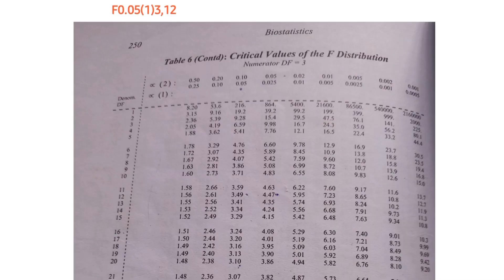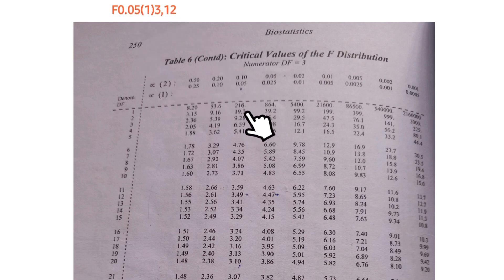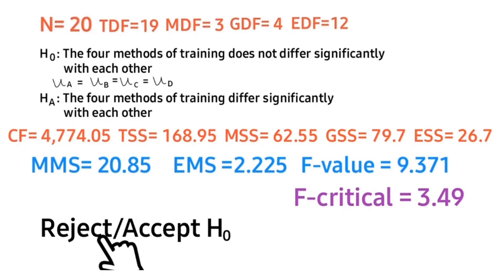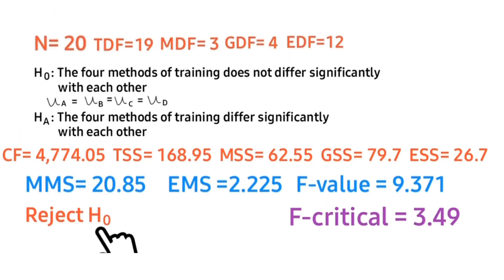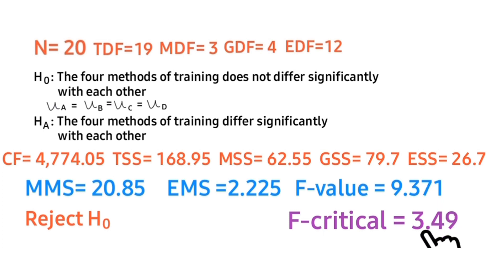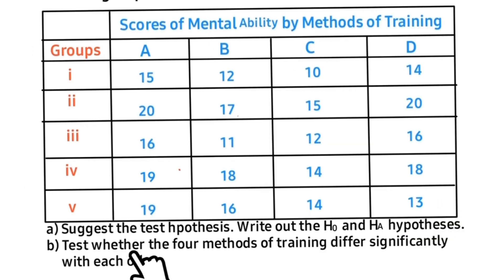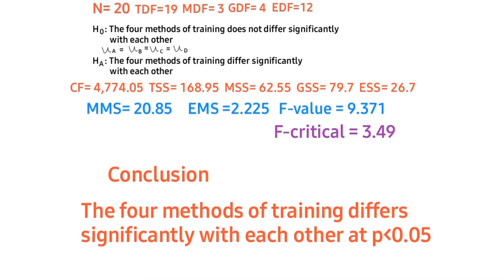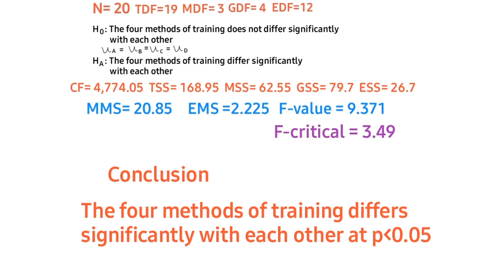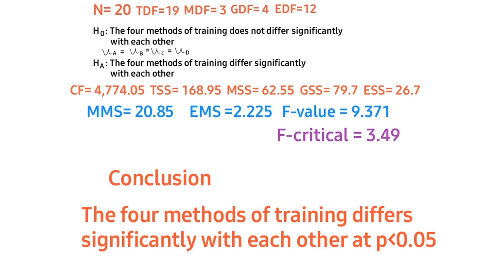Check the F-critical value from the F-distribution table with degrees of freedom 3 for the numerator and 12 for the error, at alpha equals 0.05. Tracing down to 12, the F-critical value is 3.49. Since the calculated F-value is greater than the F-critical value of 3.49, we reject the null hypothesis. Our conclusion is that the four methods of training differ significantly with each other at p less than 0.05.